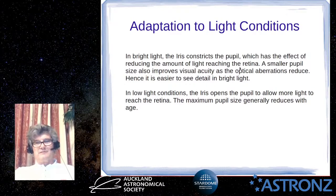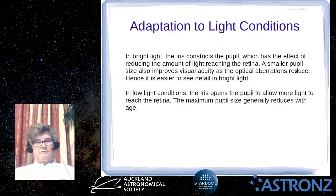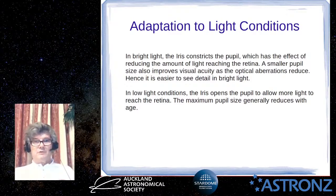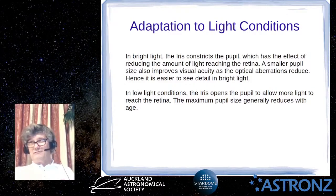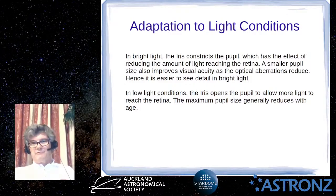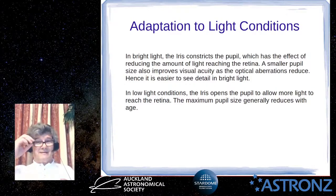A smaller pupil actually improves visual acuity because any vertebrate eye has some optical aberrations — by increasing the effective f-stop you reduce the aberration. That's why you can read more easily in bright light. However, you can still have focusing problems as you get older because the lens becomes less flexible, and other errors like astigmatism occur where a smaller pupil doesn't help much — hence prescription eyeglasses.